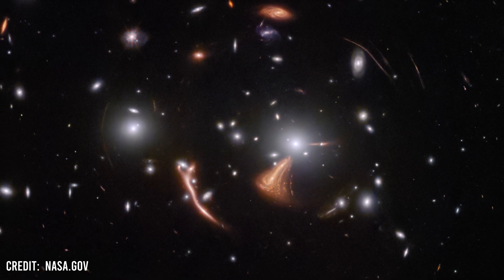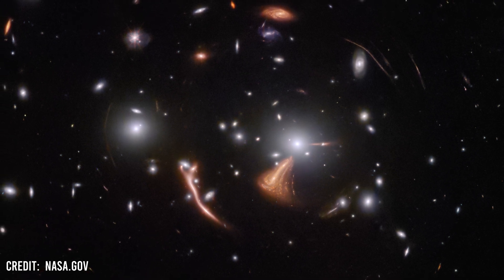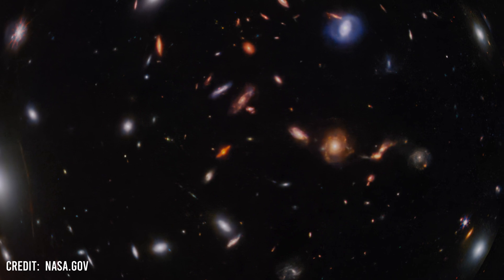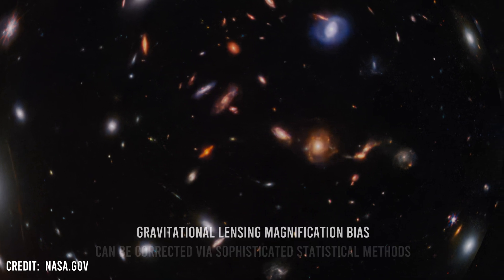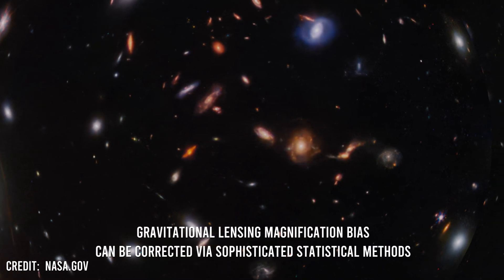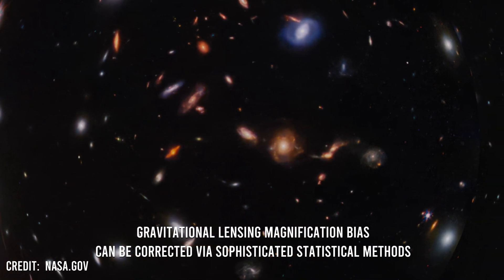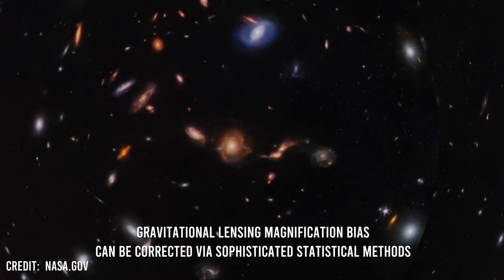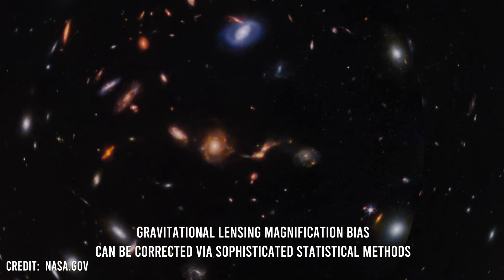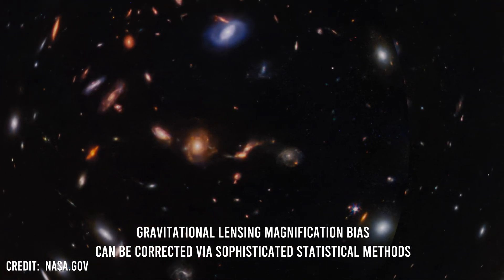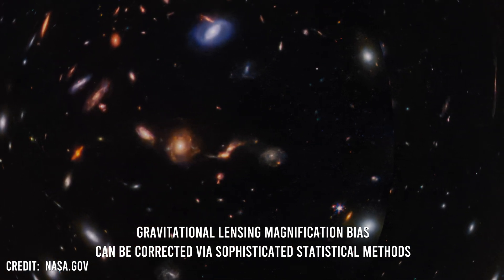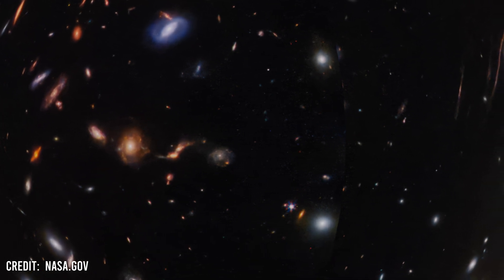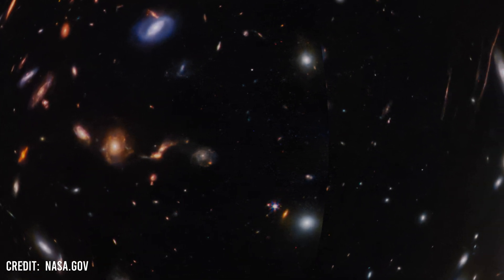One interesting aspect of gravitational lensing and dark matter is the phenomenon of gravitational lensing magnification bias. This bias occurs because the lensing effect of dark matter can magnify the light from background objects, making them appear brighter and more visible.